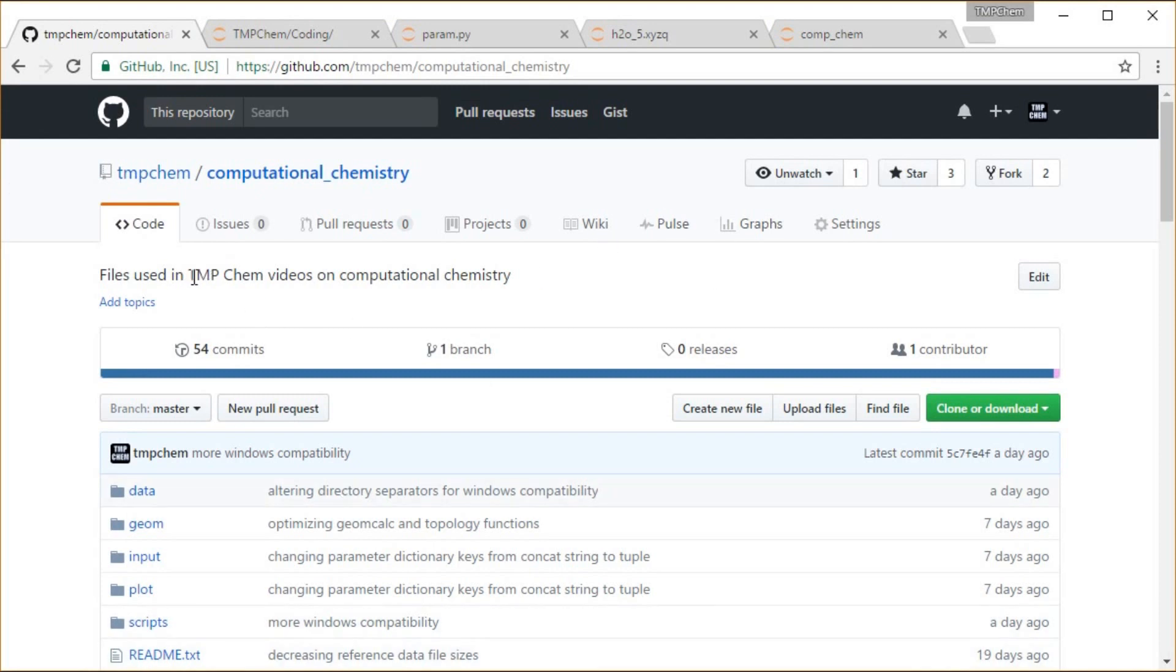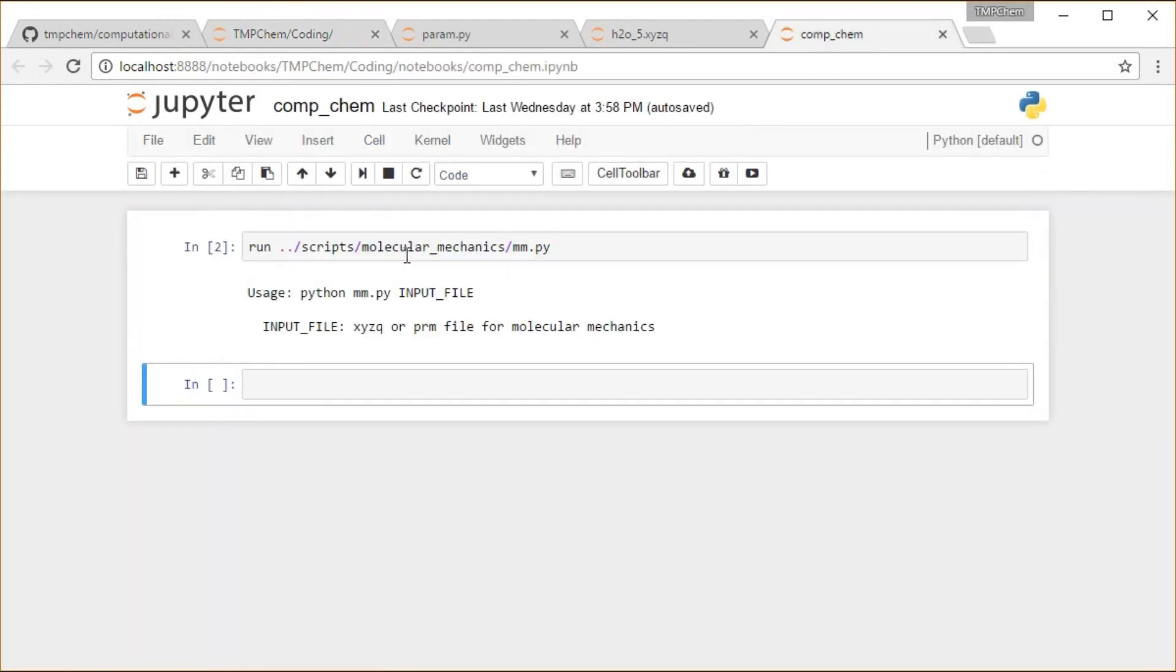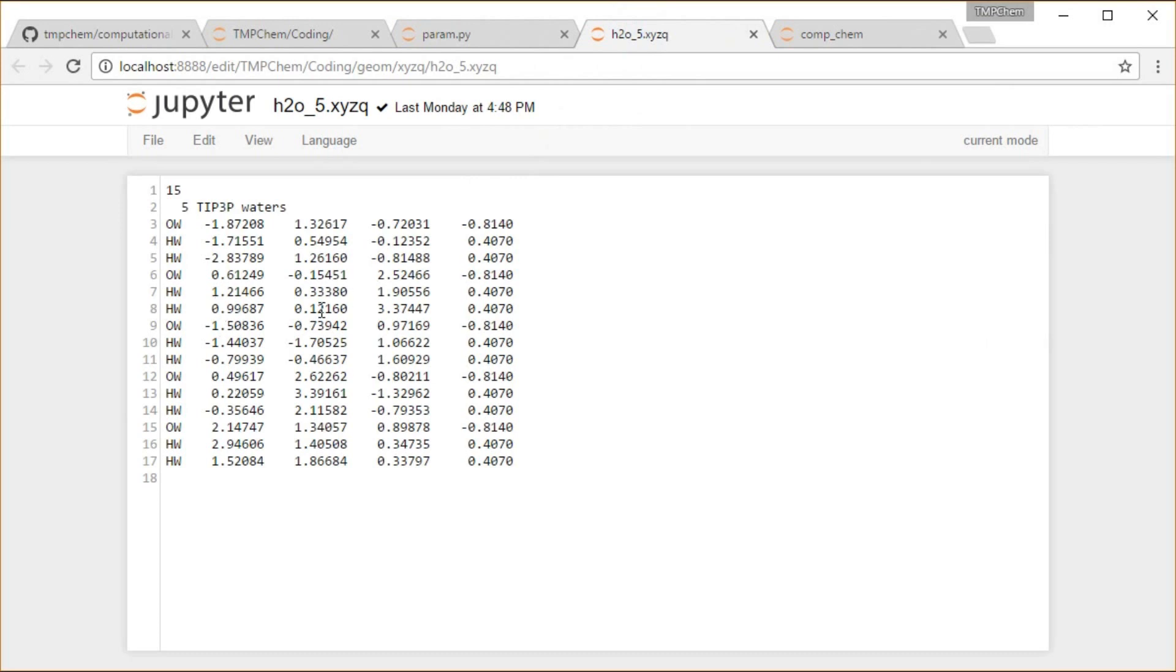Going to our example, as we have throughout this entire chapter, following along from my computational chemistry GitHub repository, we have that cloned and running in a Jupyter notebook here in the top level. In the notebooks directory, I have this compchem notebook running. What we're going to run it on is this H2O5 file here.